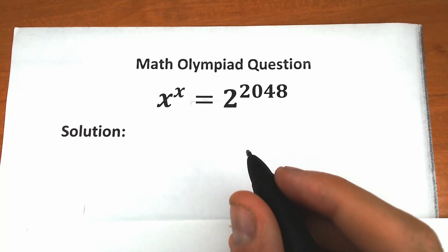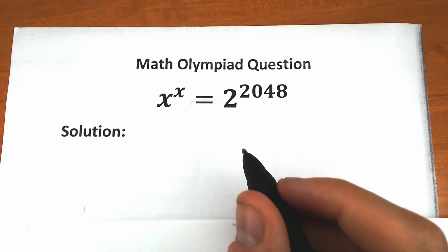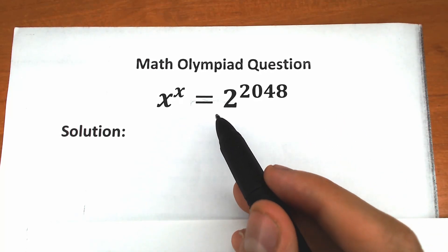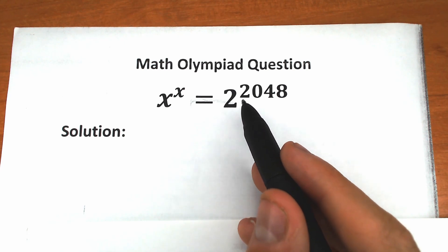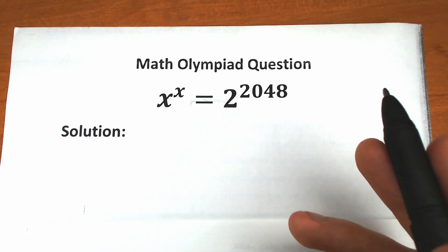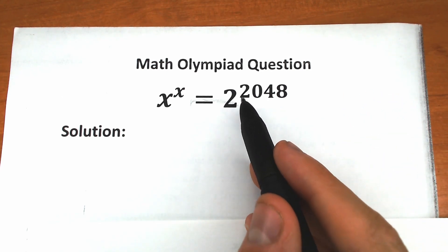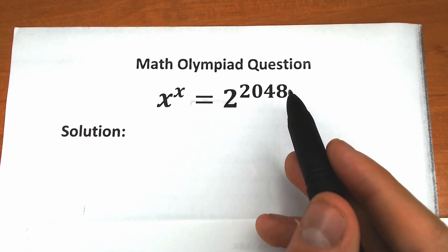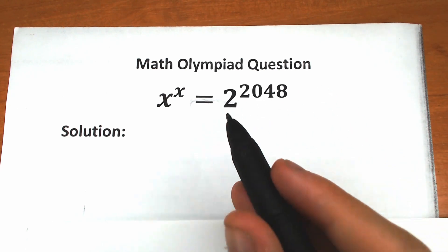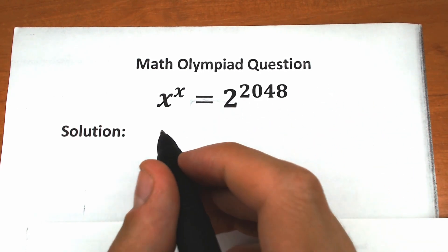Hello everyone, welcome back to my channel Higher Mathematics. Today we have a really interesting exponential equation: x to the power x equals 2 to the power 2048. A lot of students might be saying this is really hard to solve because of 2048's power — how is it possible? Take a look closely.